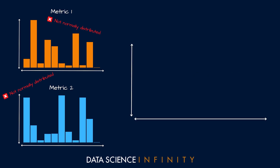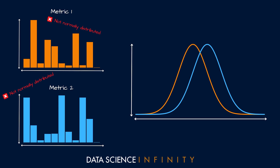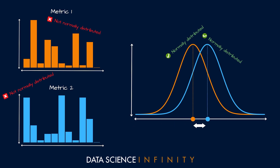So what if we could take each of those distributions and somehow transform our thinking of them in a way where we could represent them as normally distributed, or at least near to it? From a statistical point of view, this would allow us to run many types of procedures and tests where normal distribution assumptions need to be met — for example, assessing the differences in the means of our two metrics in a robust and rigorous way.